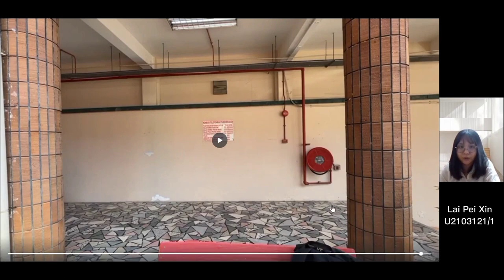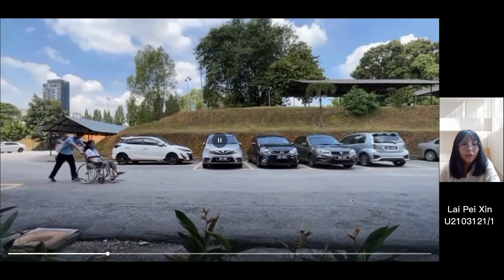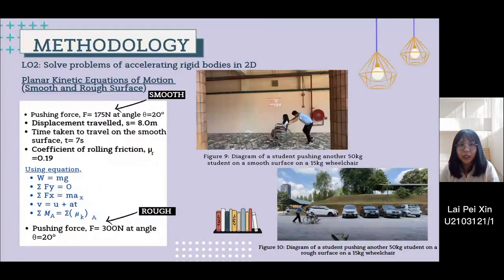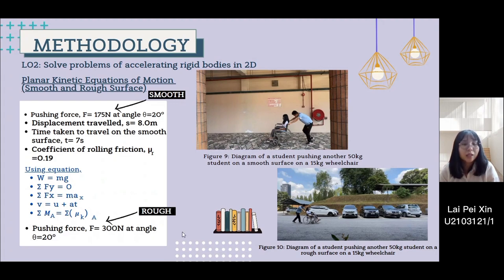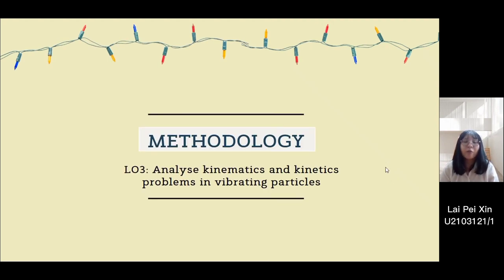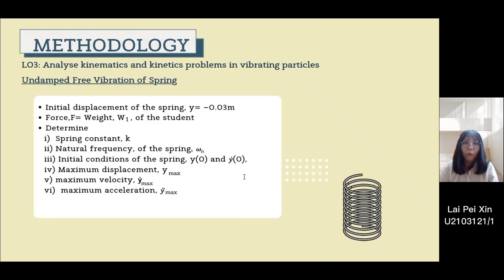One video is taken while traveling on a smooth surface and another on a rough surface. The pushing force and time taken to travel on the rough surface are higher than on the smooth surface. The coefficient of friction of both surfaces is referenced in figure 3. We obtain the acceleration of the wheelchair and the normal force on both big and small wheels for both surface conditions. In LO3, we analyze kinematics and kinetics problems in vibrating particles, assuming a spring is installed in the wheelchair. We find the spring constant and natural frequency using undamped free vibration, and calculate the motion of the spring when the student stands up.